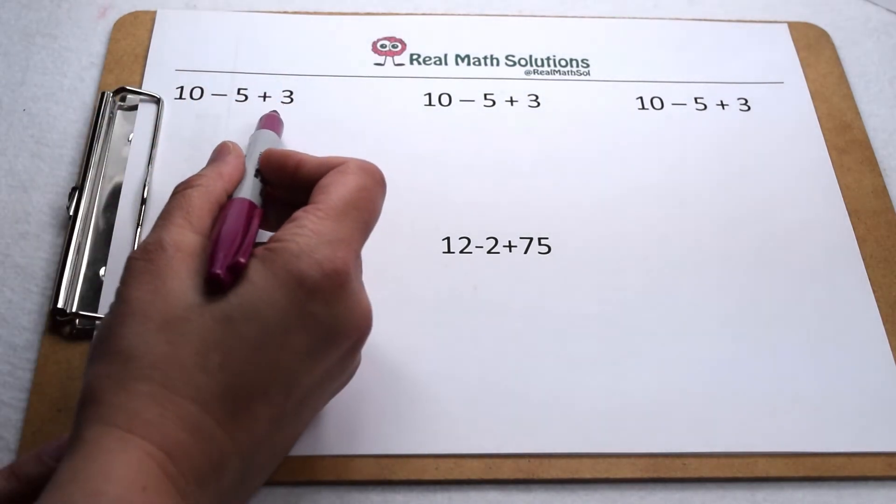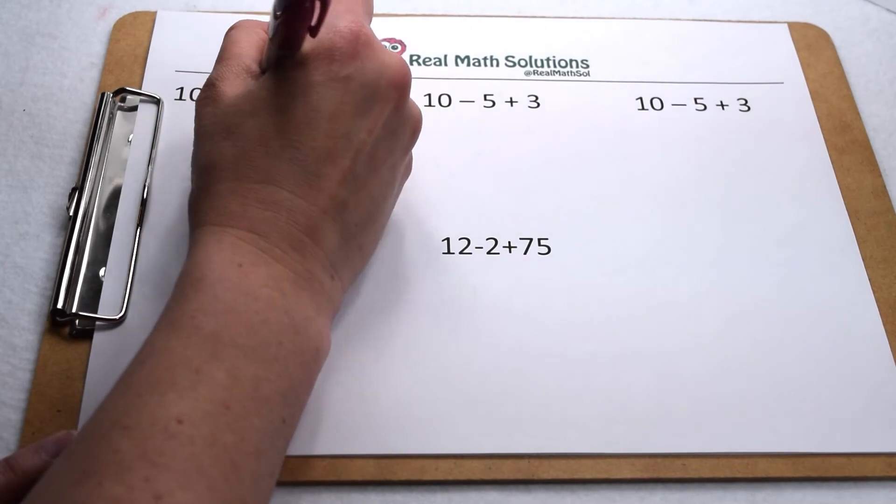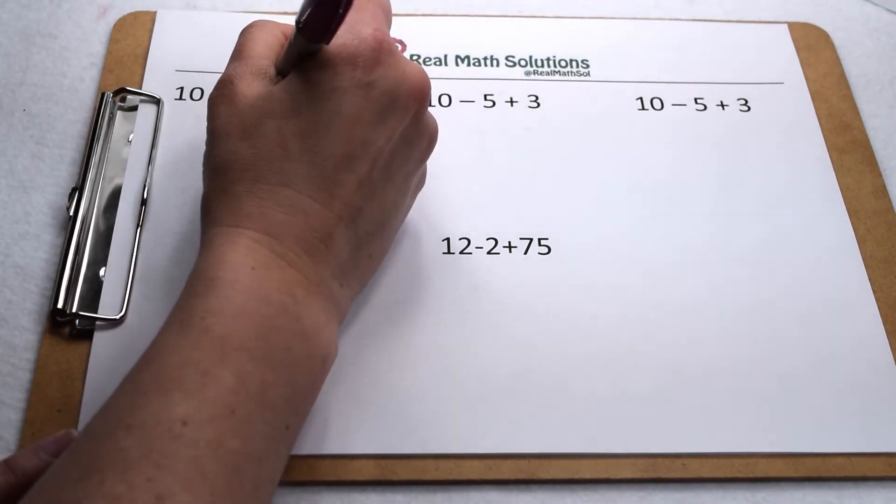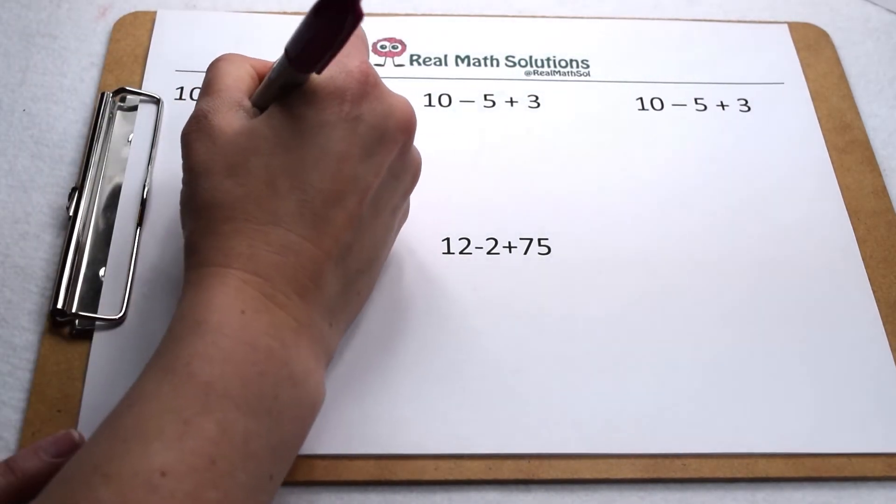First, let's do our addition before we do our subtraction. That means we would start out with 5 plus 3. 5 plus 3 is 8, so now we would have 10 minus 8. 10 minus 8 gives me 2.